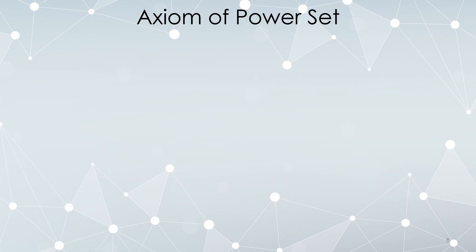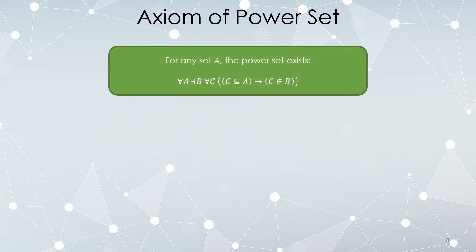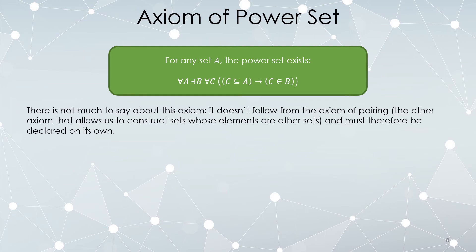Next, the axiom of power set. Given any set A, the power set exists. There exists a set B such that for any set C, if C is a subset of A, then C is an element of B — I can make a set B whose elements are the subsets of A. This does not follow from the axiom of pairing, so it has to be declared on its own. But now we can construct power sets.